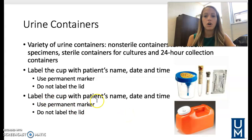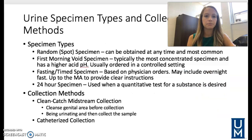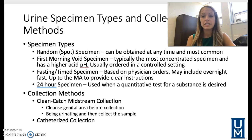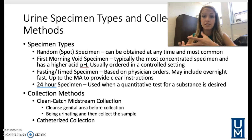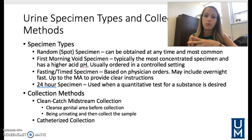There are different types and collection methods. A random or spot specimen can be obtained at any time and is the most common type. A first morning void specimen is collected in the morning when you have the most concentrated specimen, because your urine has been sitting there all night, making those products more concentrated, and you may have a higher pH level as well.